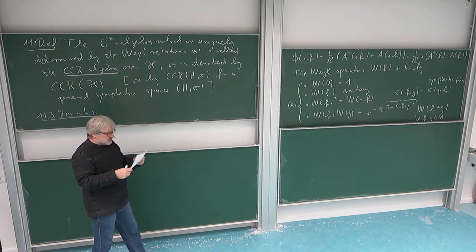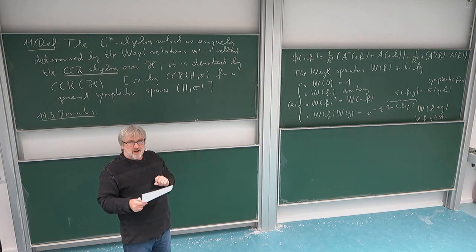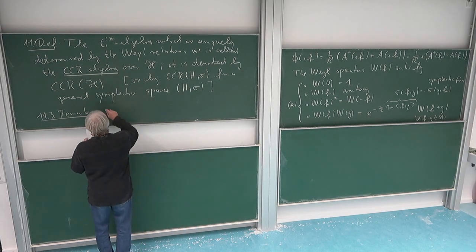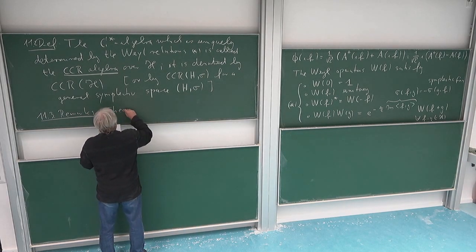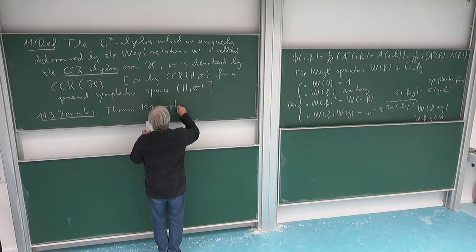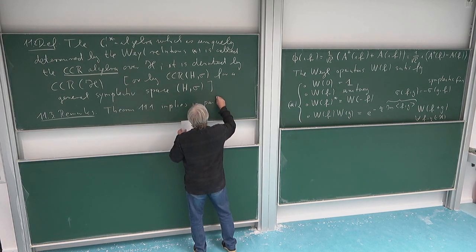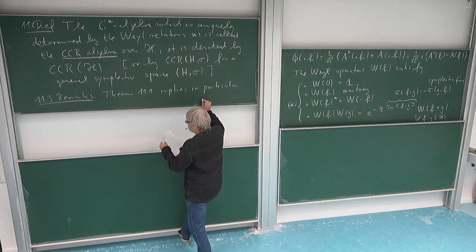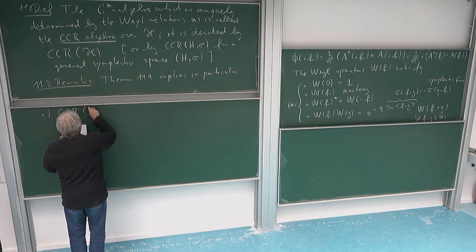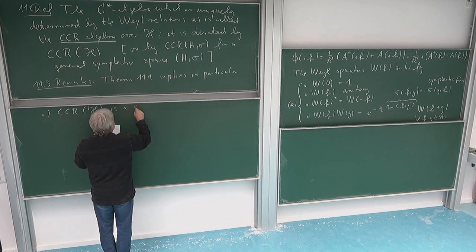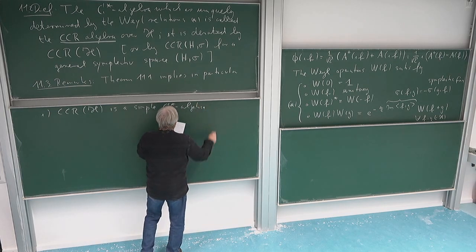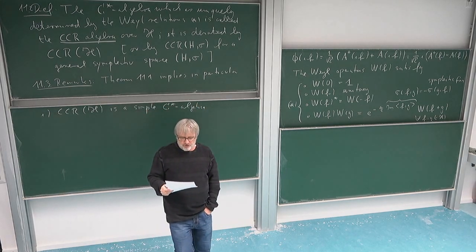Maybe the first remark, which I already said, is that actually what we proved was that this C-star algebra is a simple C-star algebra. But this is just a mathematical remark. So theorem 11.1 implies in particular, that this CCR algebra of H is a simple C-star algebra, which means that it doesn't have non-trivial closed two-sided ideals.